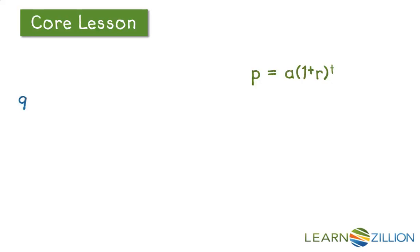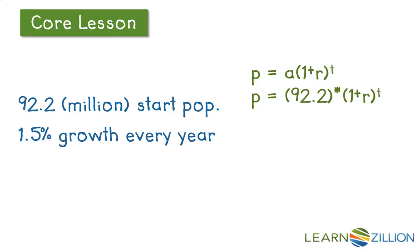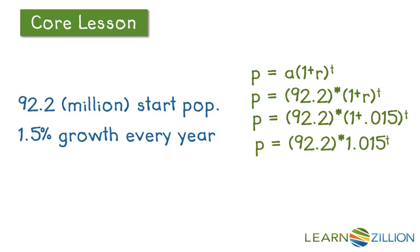Let's translate that into our equation. We start with our formula, replacing Y and X with P and T, where P is the population and T is time. Our starting population was 92.2 million, which we plug in for 'a'. The growth rate is 1.5% per year, so 'r' equals 0.015. Simplified, our formula is: population = 92.2 million × (1.015)^T.